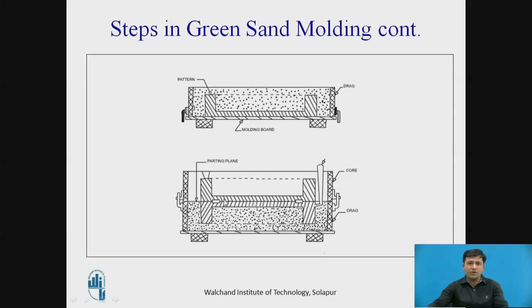The metal is poured and flows in the direction given by the gating system, and the part solidifies over a period of time. The clamping must be designed properly in the correct places, because when molten metal comes in, there is an upward buoyancy force. If not clamped properly, this can lead to a mismatch at the parting line and cause different defects such as parting line defects. Proper care must be taken.